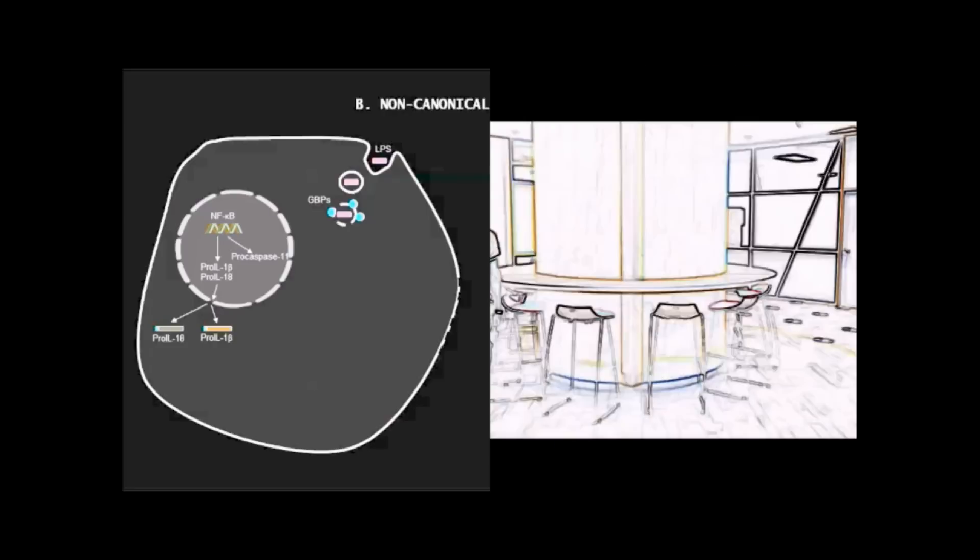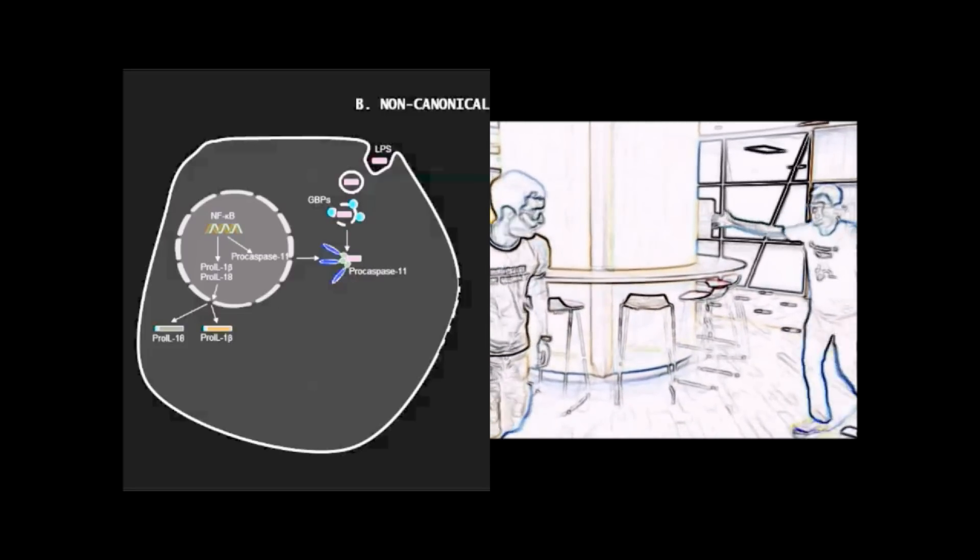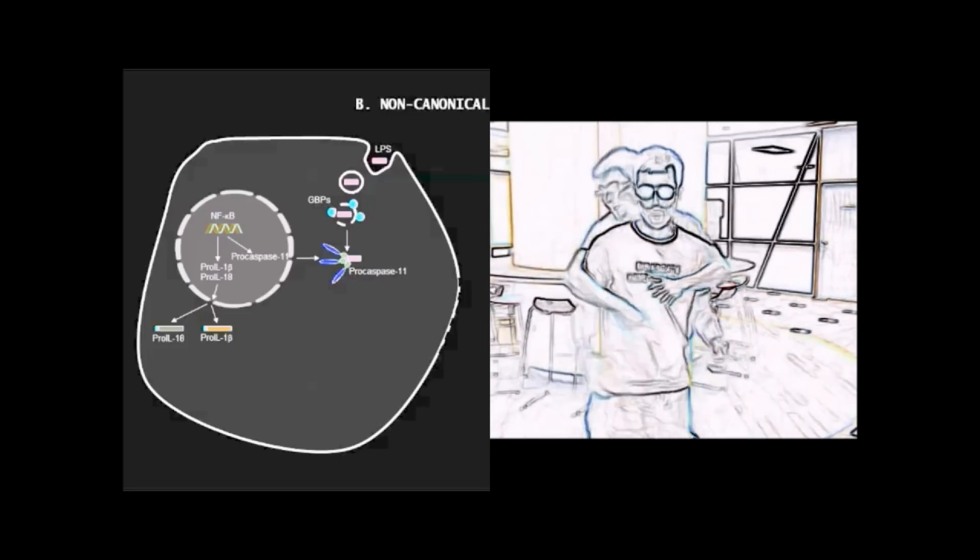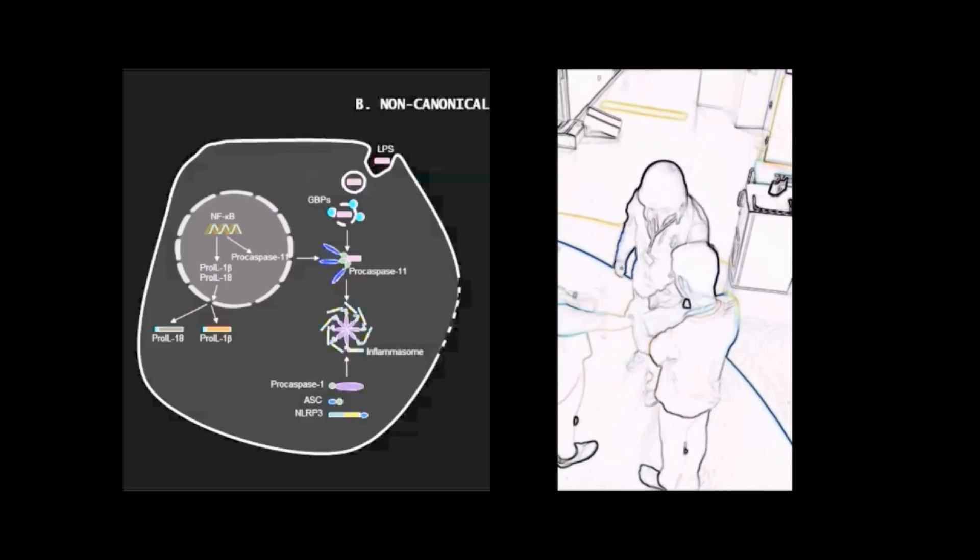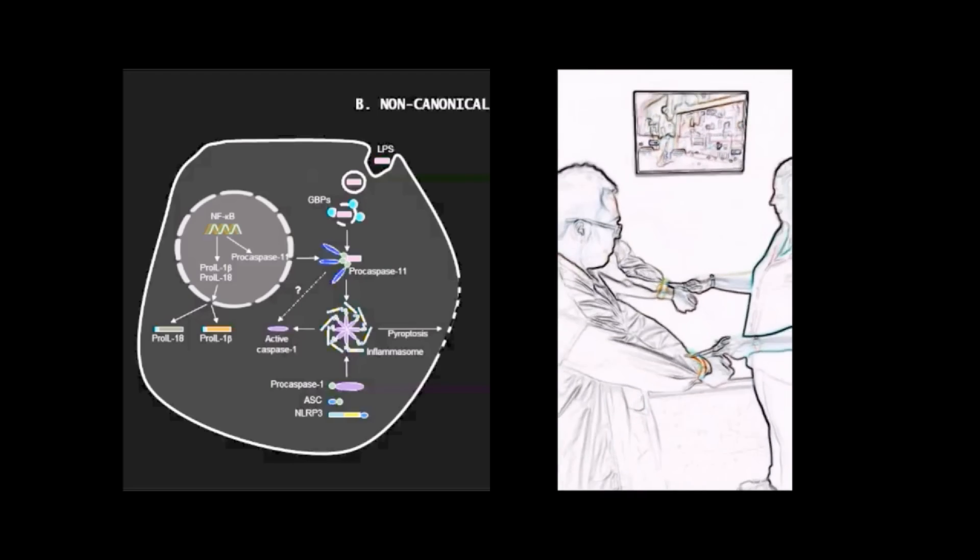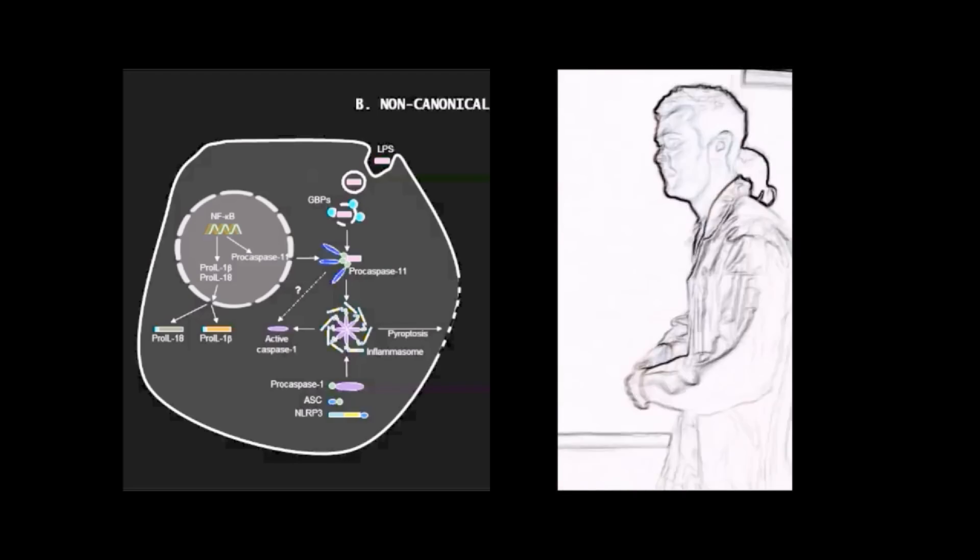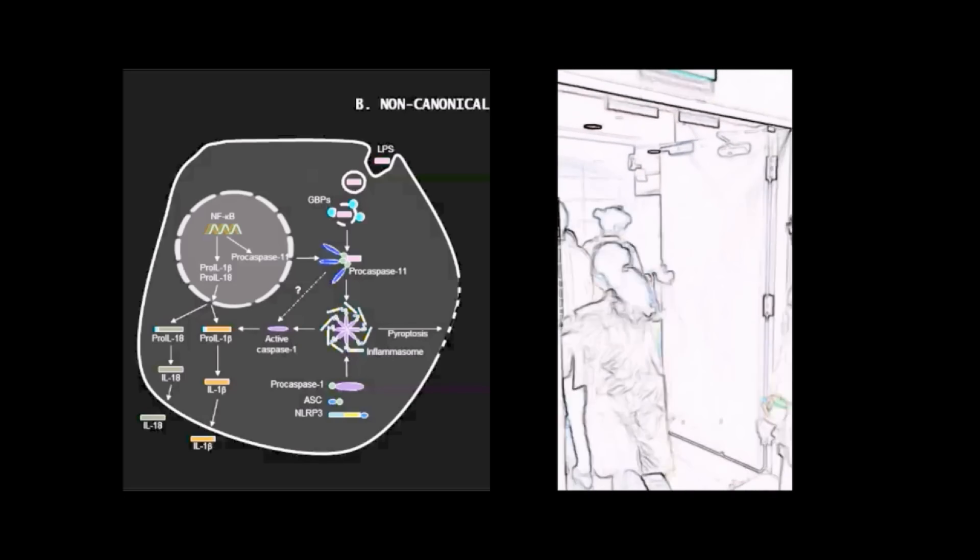But a second line of defense is waiting. Pro-caspase-11 is able to detect cytosolic LPS and initiate the formation of the inflammasome. This causes the release of cytokines from the cell by similar mechanisms as the canonical pathway, as well as pyroptosis of the cell, an inflammatory form of cell death.